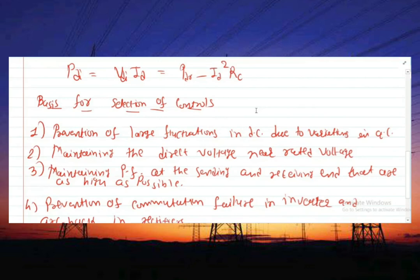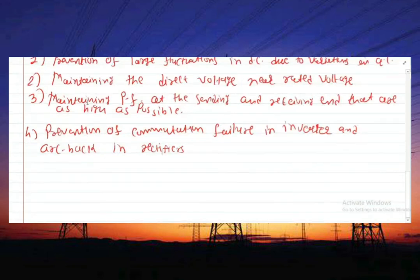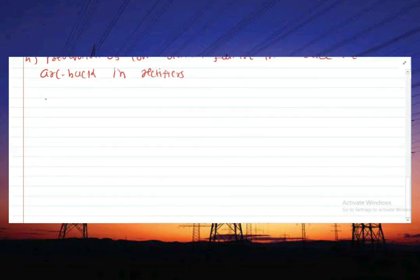Therefore, rapid control to prevent the fluctuation of direct current is essential for proper operation of the system. Without such control, the AC system will not be implemented or it is impractical. The second point is maintaining the direct voltage at the rated voltage, which is important. The third is maintaining the power factor at the sending and receiving end as high as possible. There are some reasons for maintaining power factor high.